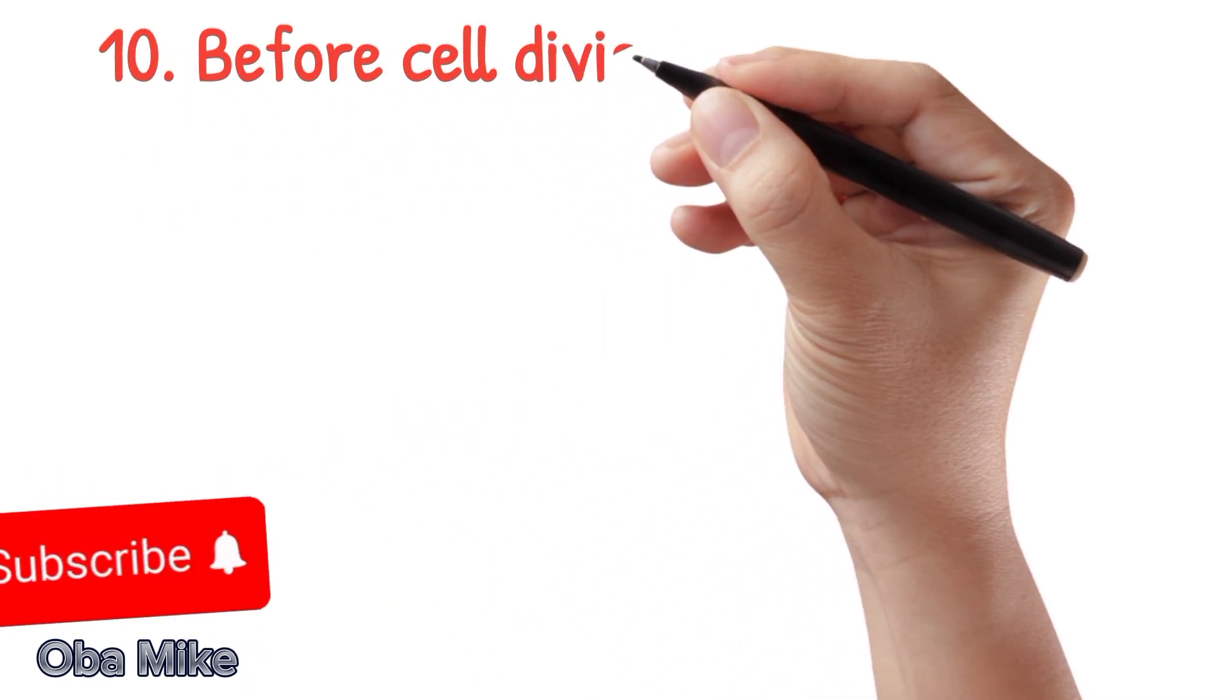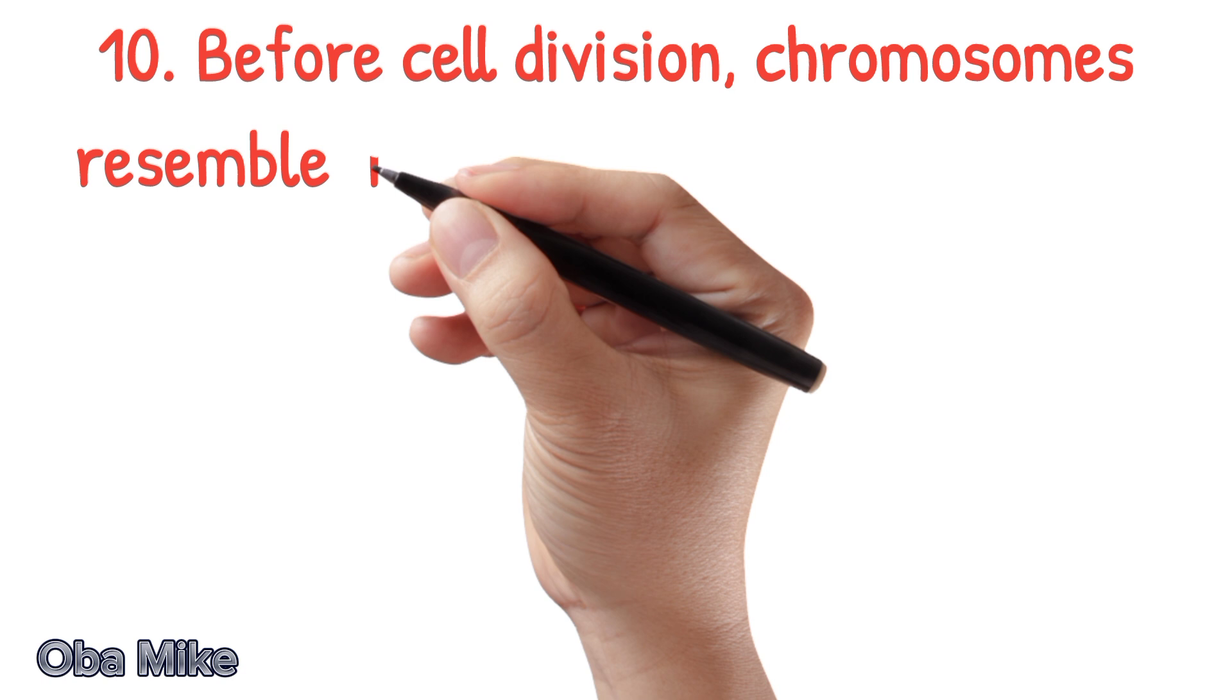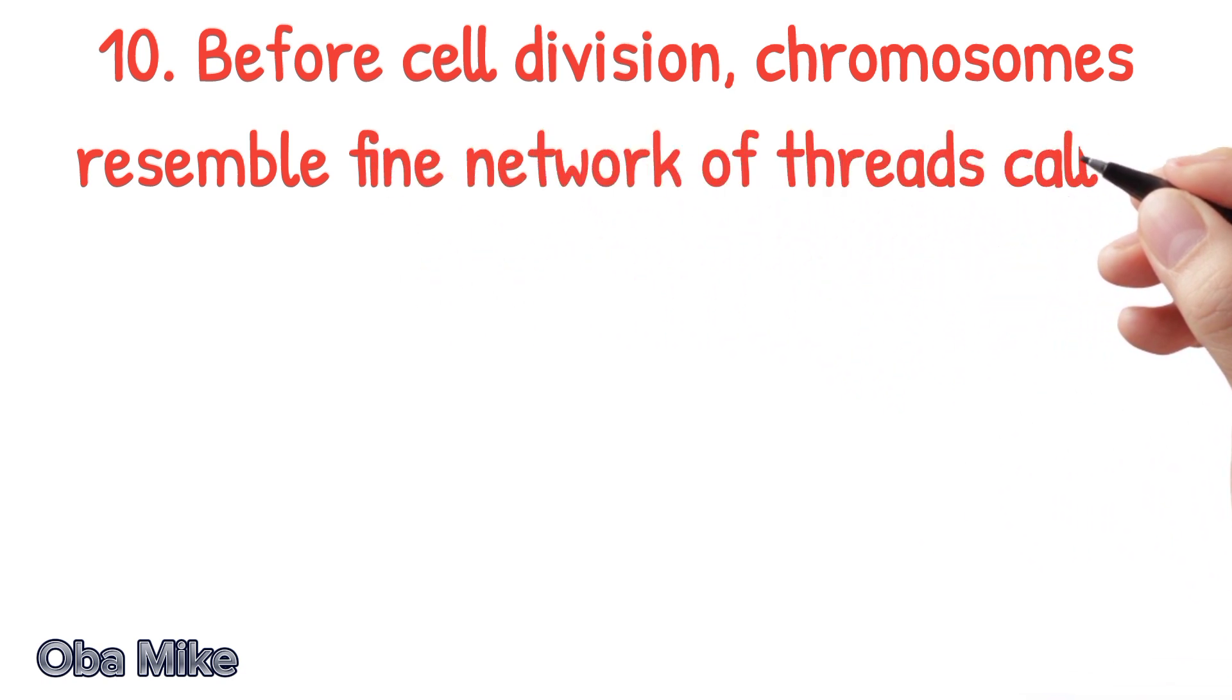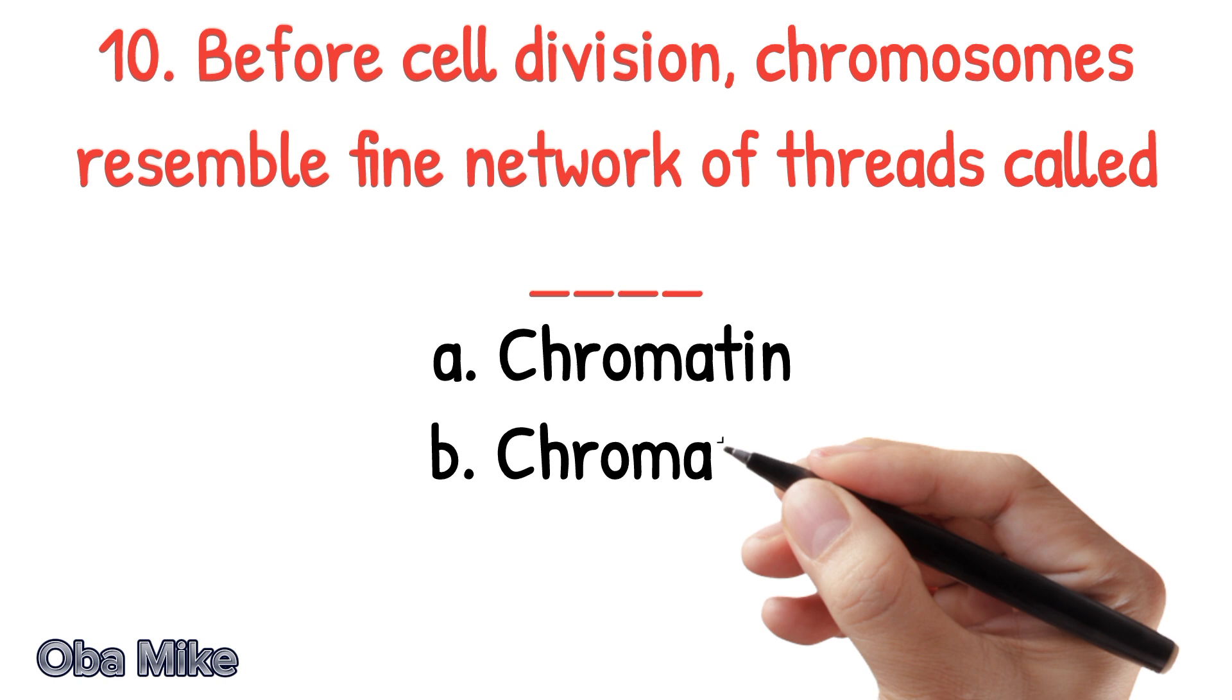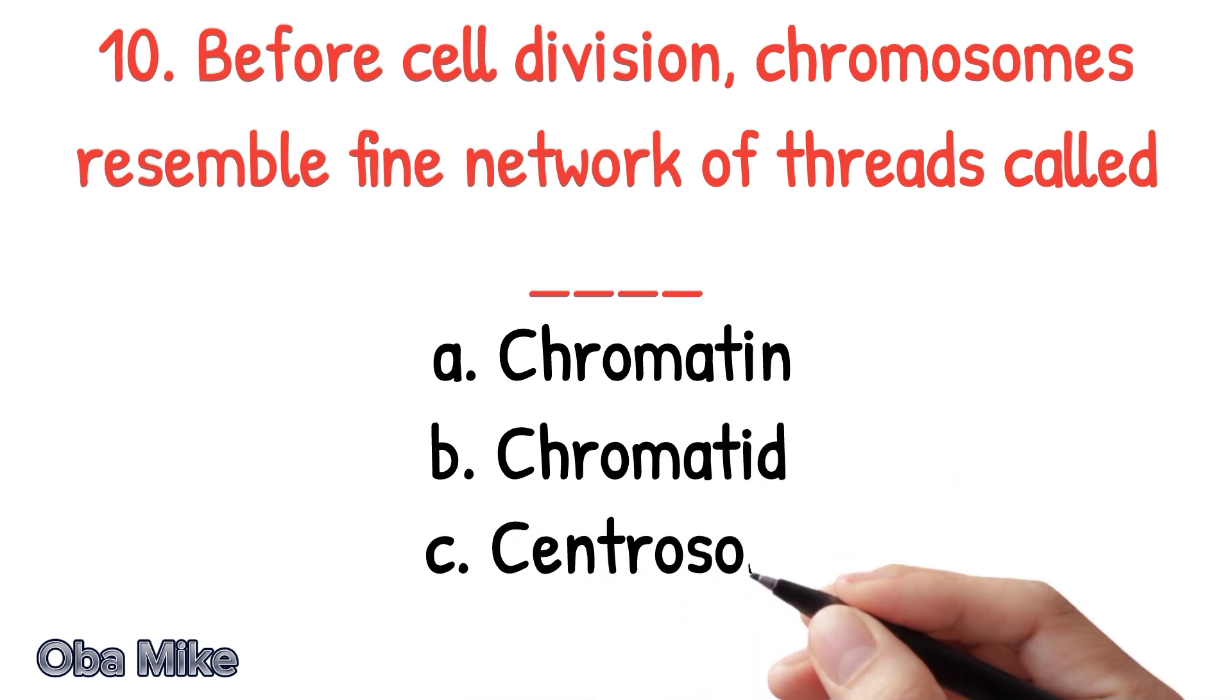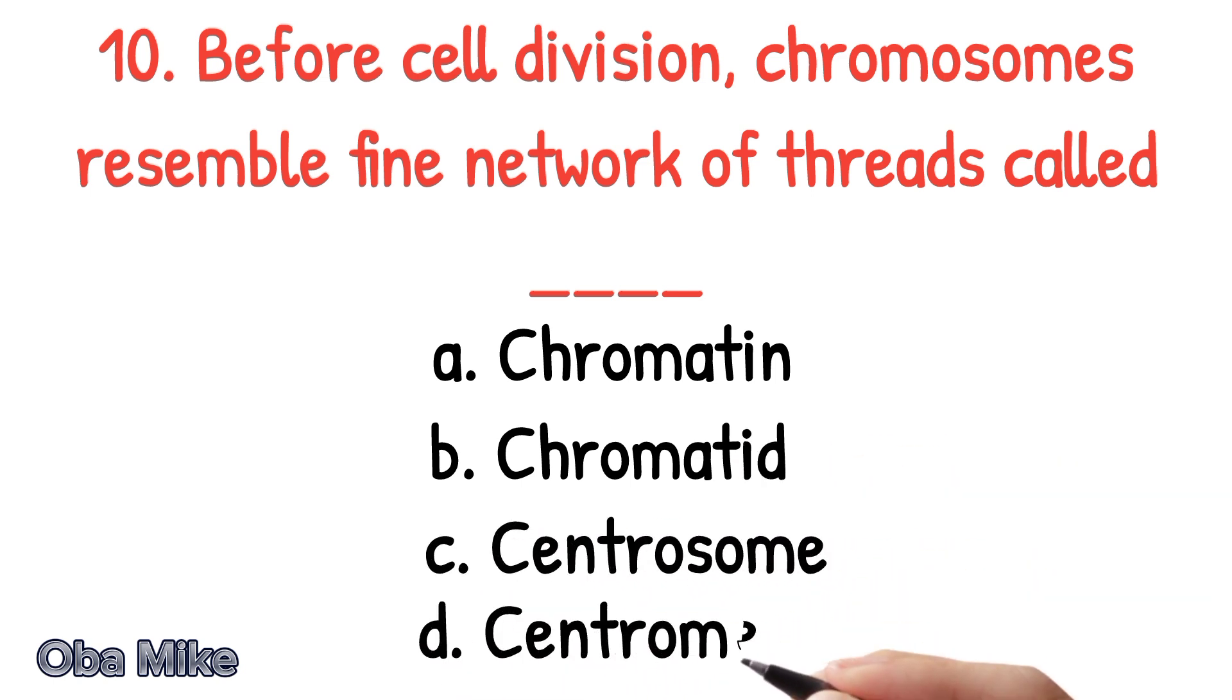Number 10. Before cell division, chromosomes resemble fine network of threads called dash. A. Chromatin, B. Chromatid, C. Centrosome, D. Centromere. The correct answer is A. Chromatin.